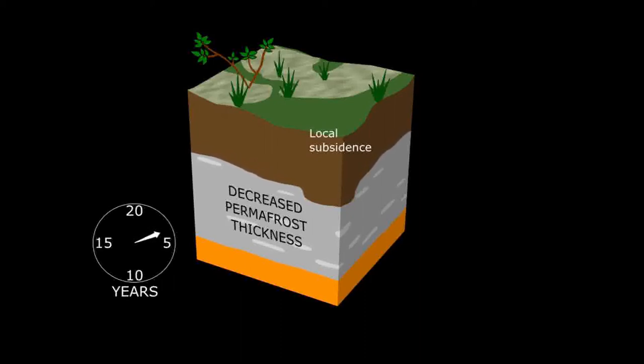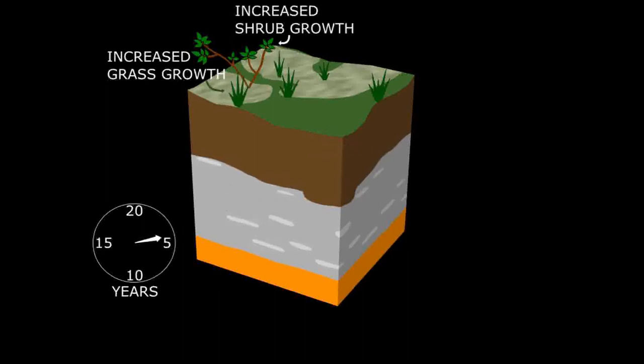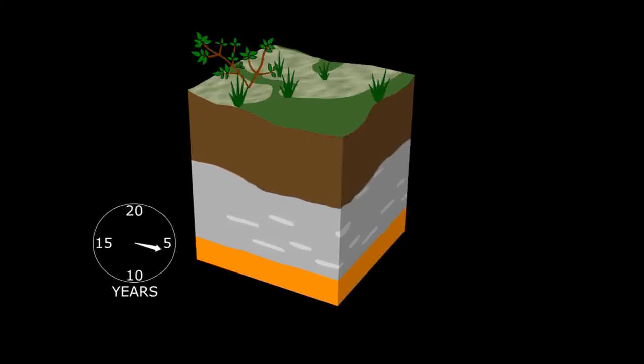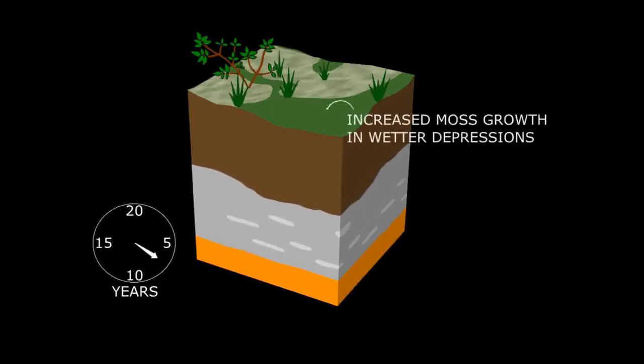As the ice lenses melt and the permafrost thaws, the soil surface in the active layer subsides and creates a depression or hollow. In this changed land surface, the patterns of plant change with mosses in the wet hollows and lichens on the dry mounds.